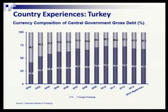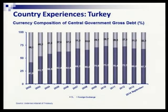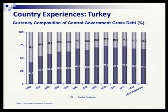This chart shows the currency composition of the central government's gross debt. Back in 2002, the ratio of foreign currency debt was around almost 60% of total debt. Since we followed a debt management strategy to minimize currency risk, we reduced foreign currency borrowing. Now, the share of foreign currency debt is only 30% of total debt.